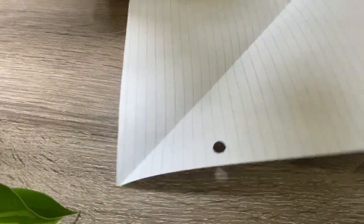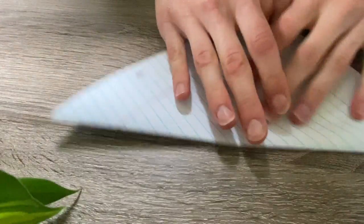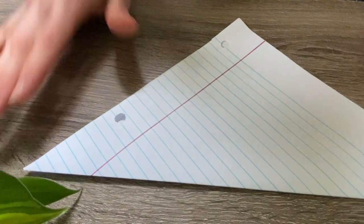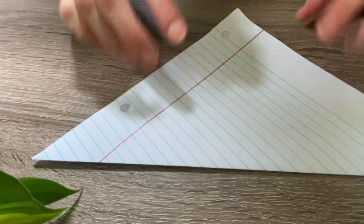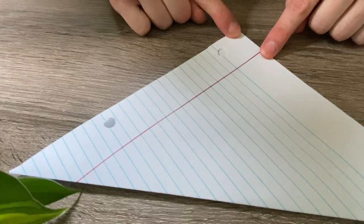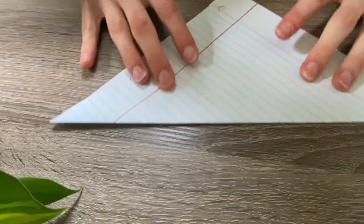Now we have a nice square piece of paper and we're going to fold it like this in a triangle. Then we are going to take this point and fold it up